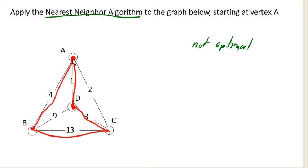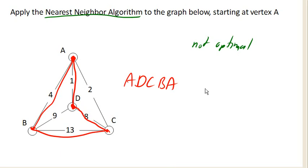Then to get back to the start, my only option is to go that way. And we ended up with the circuit A, D, C, B, A. The total cost there is 1 plus 8 plus 13 plus 4, which is 26.